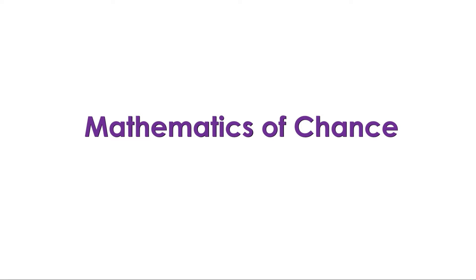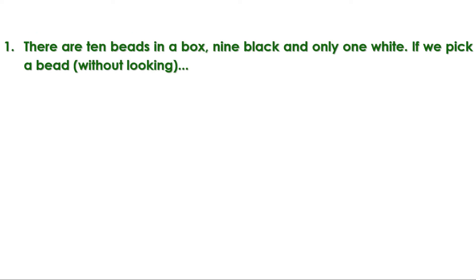When we toss a coin, the possibility of getting a head is 50% or 1 by 2. Similarly, the possibility of getting a tail is also 1 by 2. Let us discuss how to express possibilities as numbers.